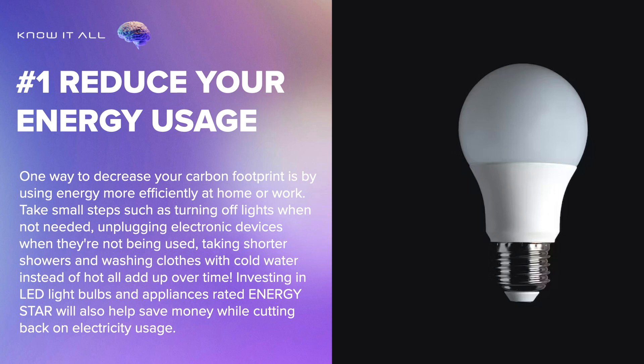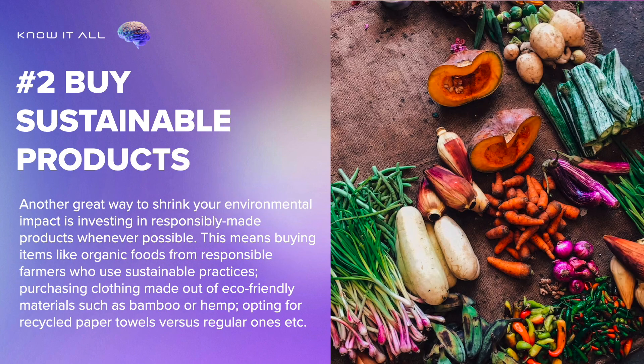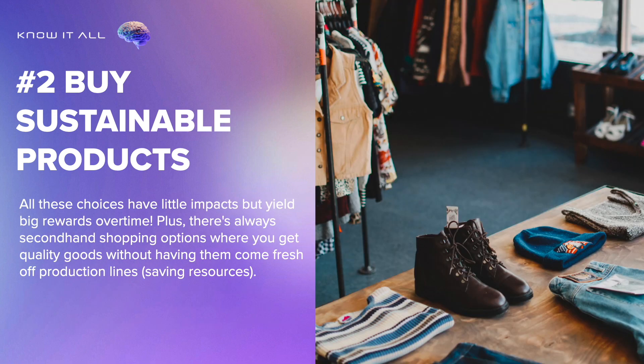Investing in LED light bulbs and appliances rated Energy Star will also help save money while cutting back on electricity usage. 2. Buy sustainable products. Another great way to shrink your environmental impact is investing in responsibly made products whenever possible. This means buying items like organic foods from responsible farmers who use sustainable practices, purchasing clothing made out of eco-friendly materials such as bamboo or hemp, opting for recycled paper towels versus regular ones.